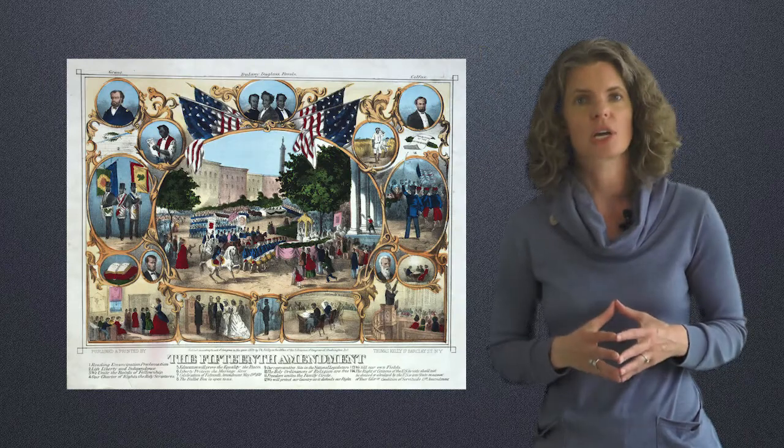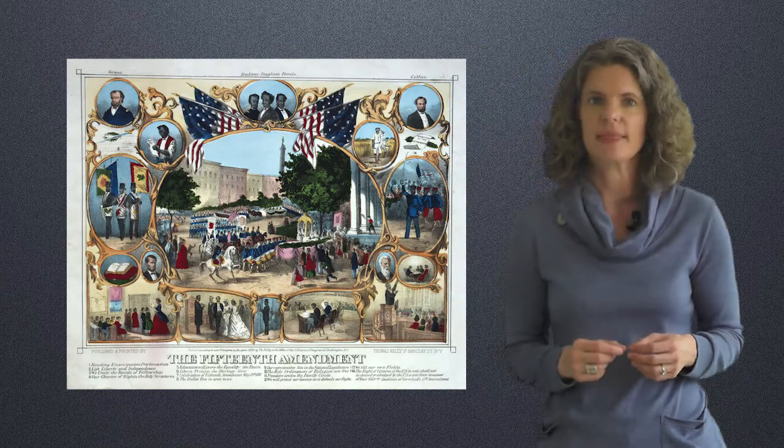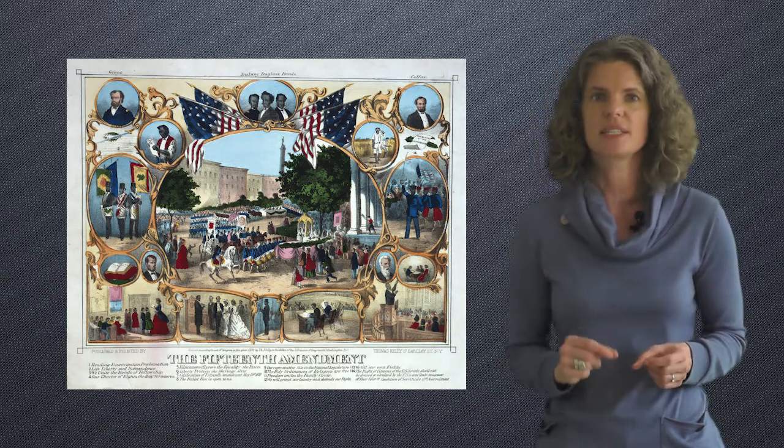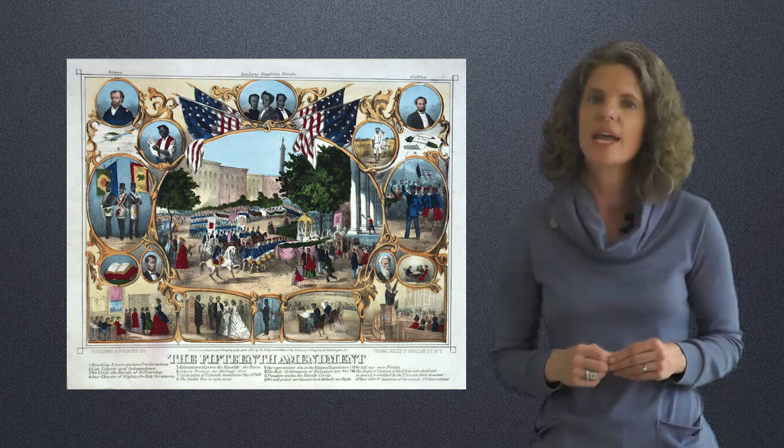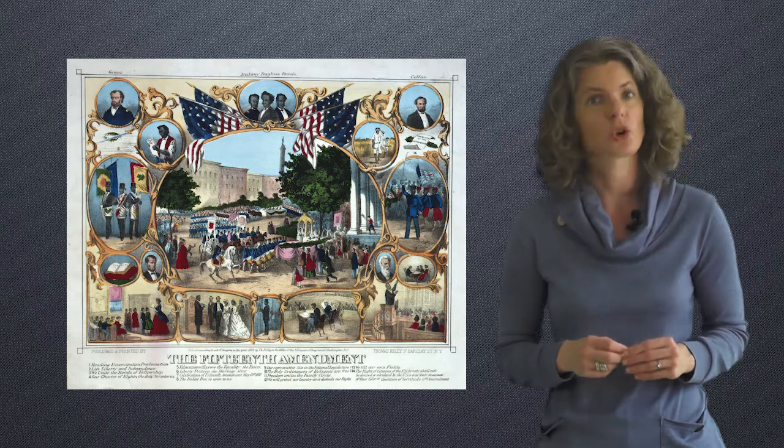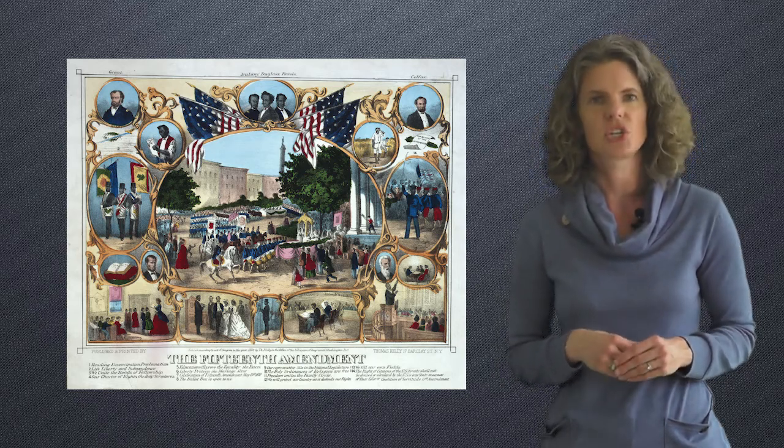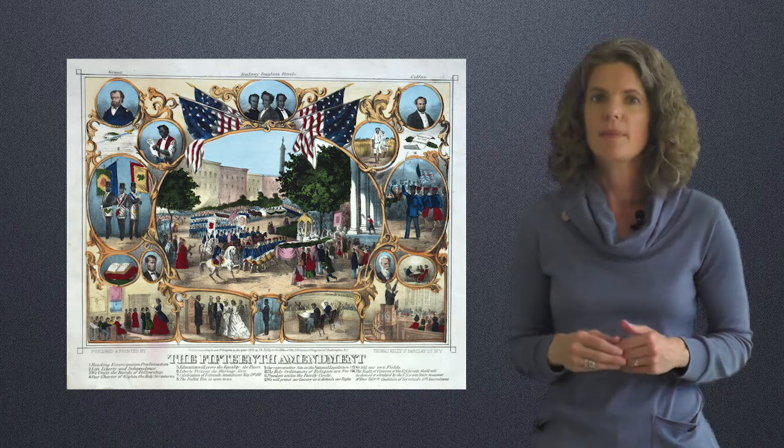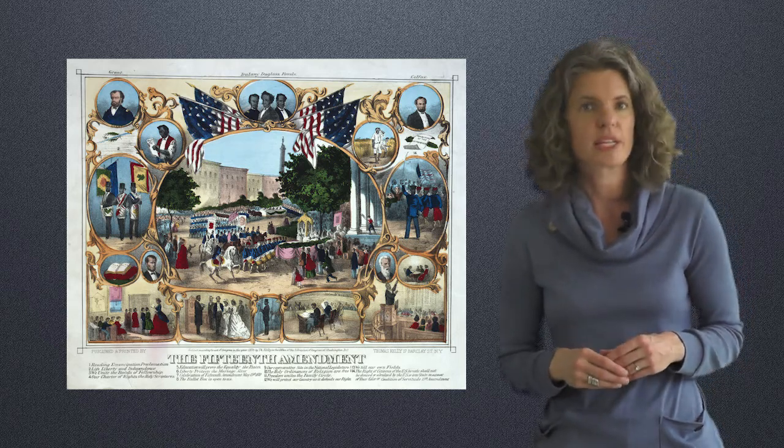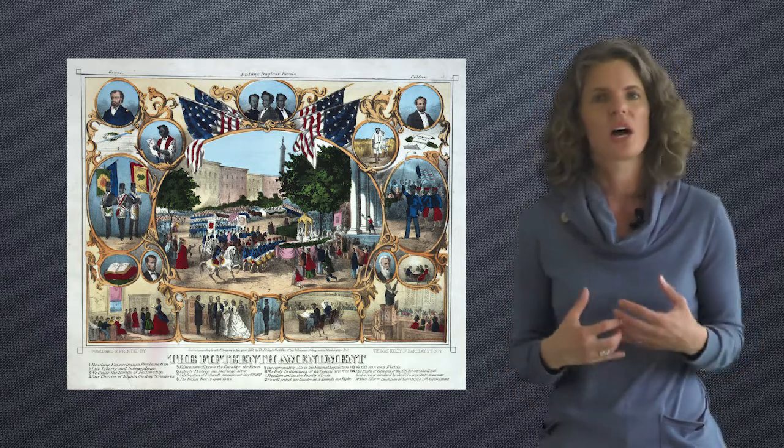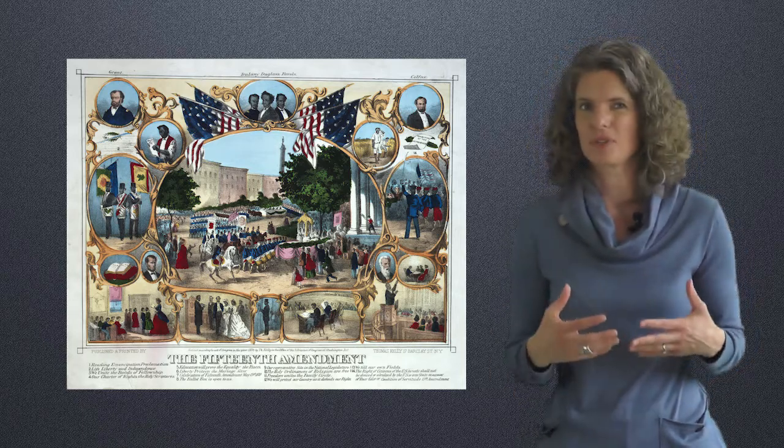The reconstruction Congress also passed the 15th amendment, which stipulated that the right of citizens of the United States to vote shall not be denied or abridged by the United States or by any state on account of race, color, or previous condition of servitude. That amendment also guaranteed voting rights for African Americans in the north, where again, even after the Civil War, not all states had allowed black people to vote.